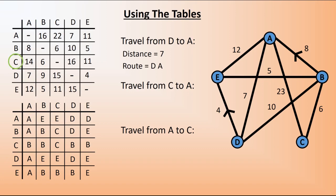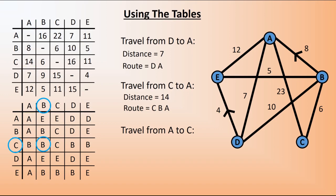To travel from C to A, the distance is 14. Looking at C to A in the route table, we notice it says B — so our route is not straight from C to A but goes via B: C to B to A. We need to check this is the complete route. C to B in the table is via B — one of the two letters, so we can go straight from C to B. And B to A is via A — also fine. So C to B to A is our final route.